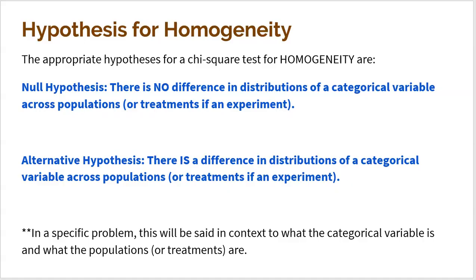The proportions don't have to be the same number across categories — maybe Ford is 10%, Chevy is 15%, Volvo is 3%, Lexus is 1% — but those proportions must hold across all populations for the null to be true. The alternative just says at least one is different. In a specific problem, make sure you add context about what those categorical variables are when writing your hypotheses.